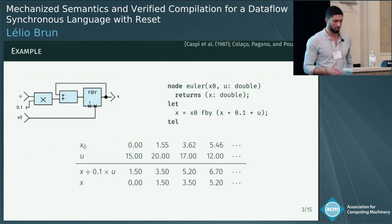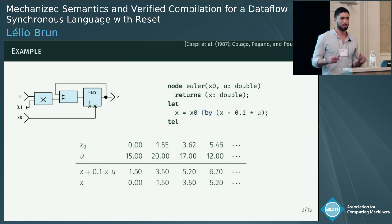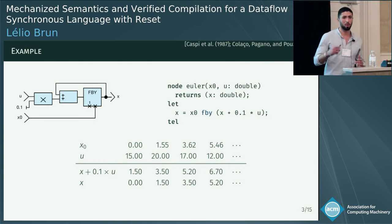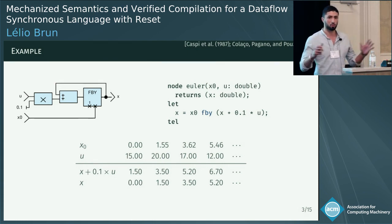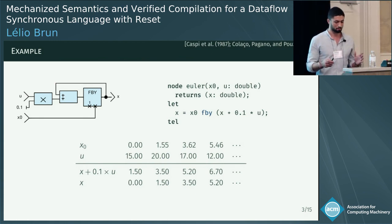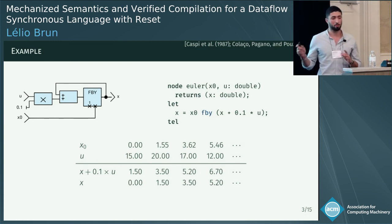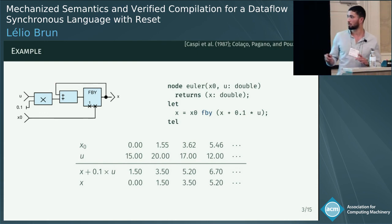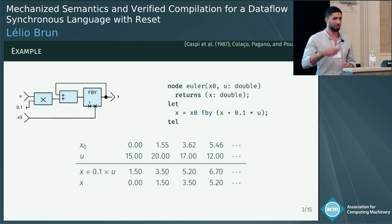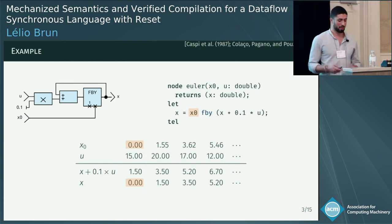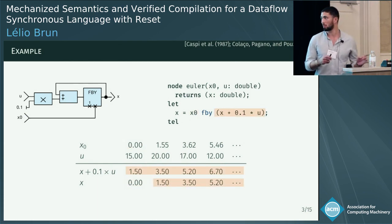Let's see an example of the source language. The diagram on the left and the code on the right describe the same object. The Euler node is a function over streams with two inputs x0 and u, and one output x. It is defined by a single equation implementing a forward Euler integration scheme, where arithmetic operators operate pointwise over streams and the follow-by operator represents a unit delay. The chronogram associates variables to streams: we fix x0 and u, and x starts from x0 then takes the previous stream values delayed by one cycle.